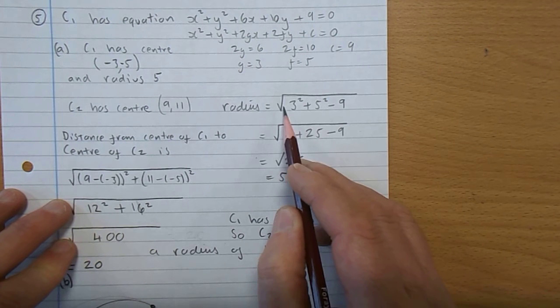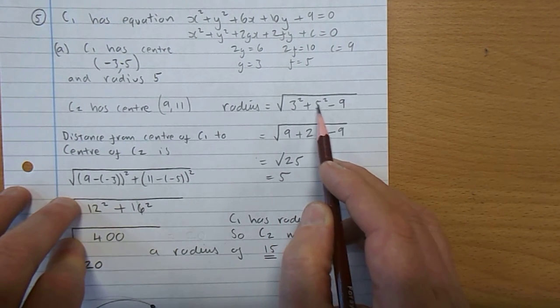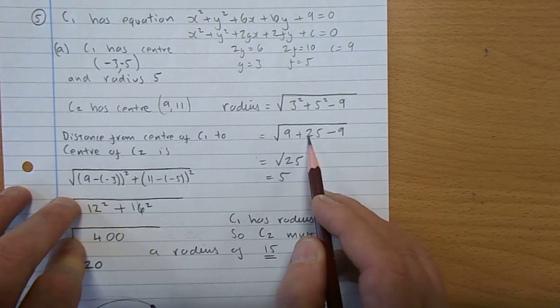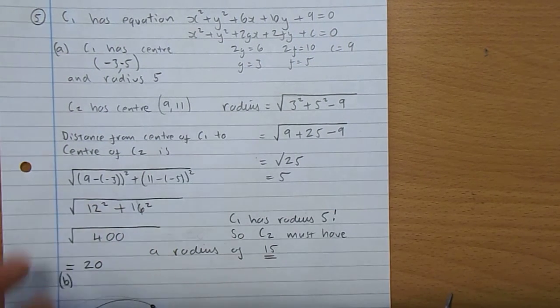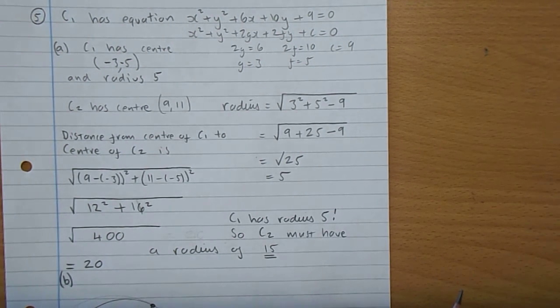and has radius 5. Well, I've done that over here. The radius is the root of g squared plus f squared take away c. 9 and 25 take 9 gives you the root of 25 which is 5.